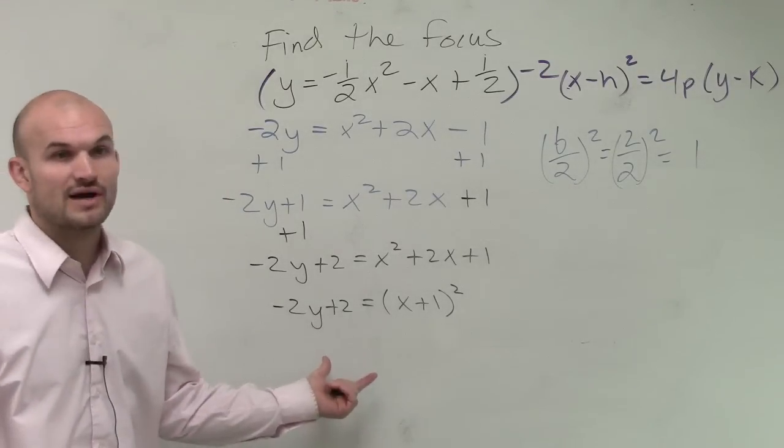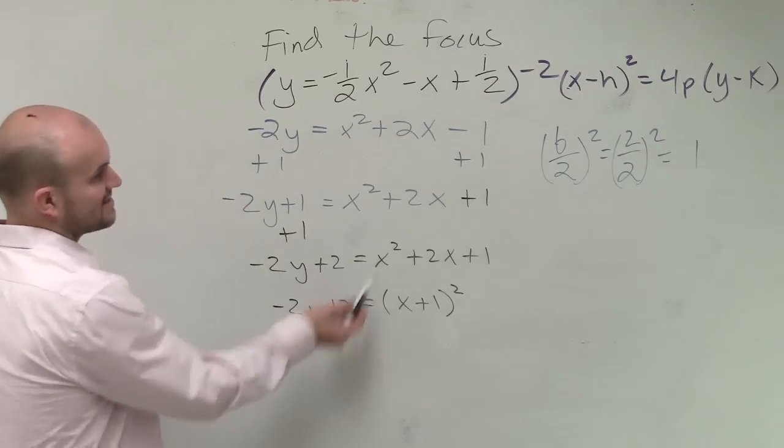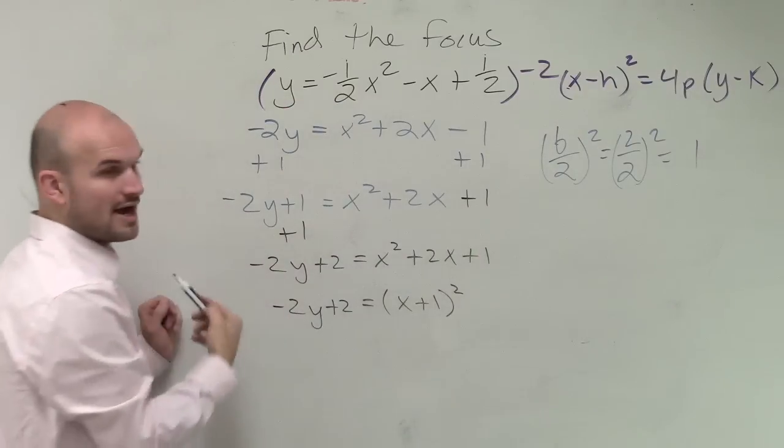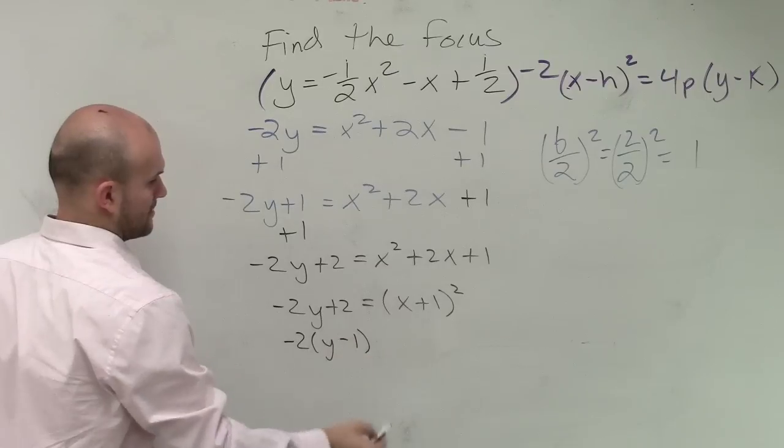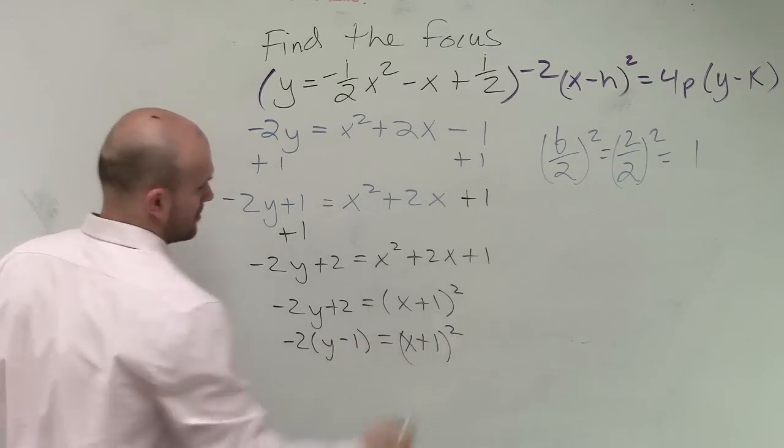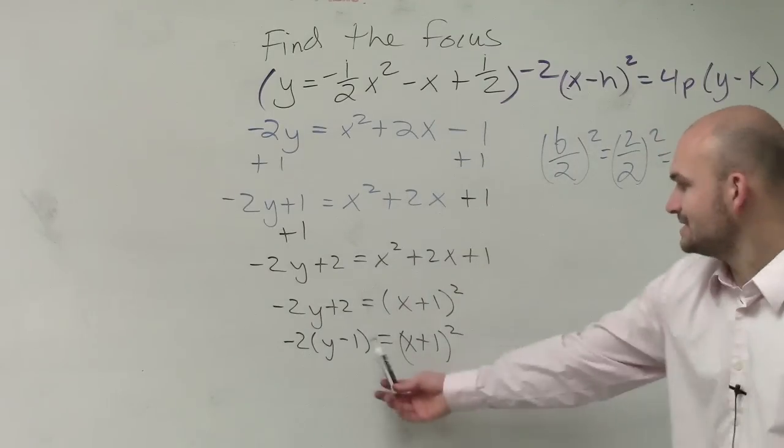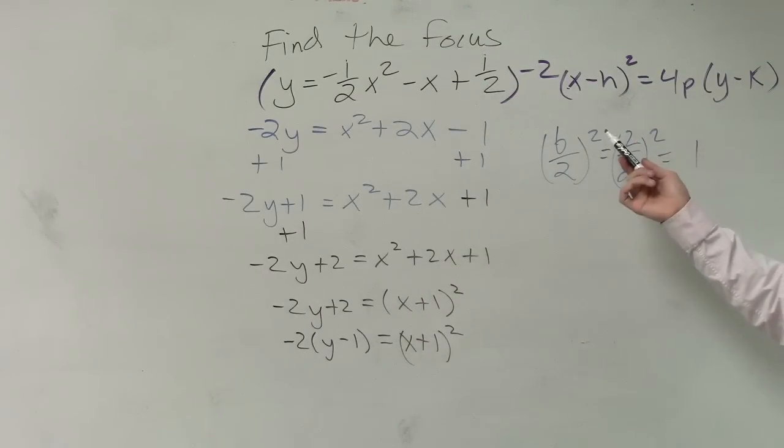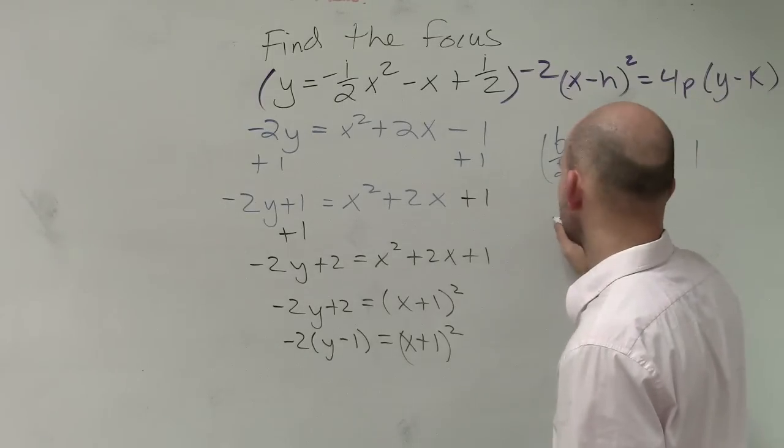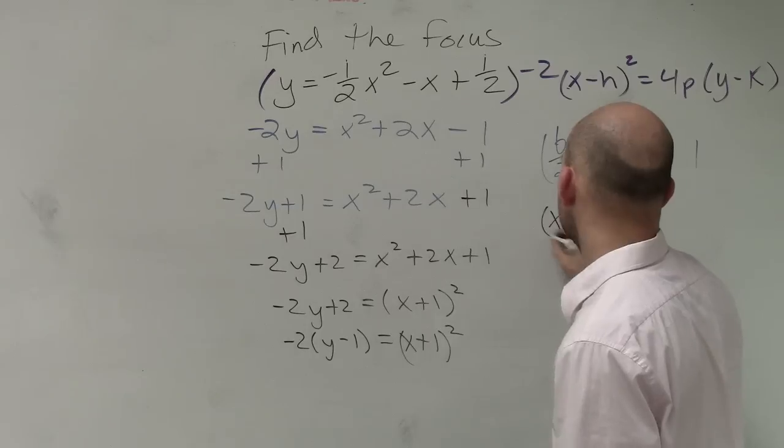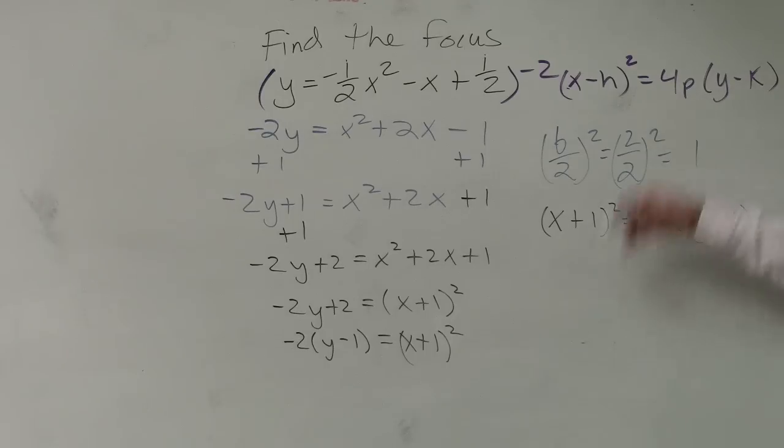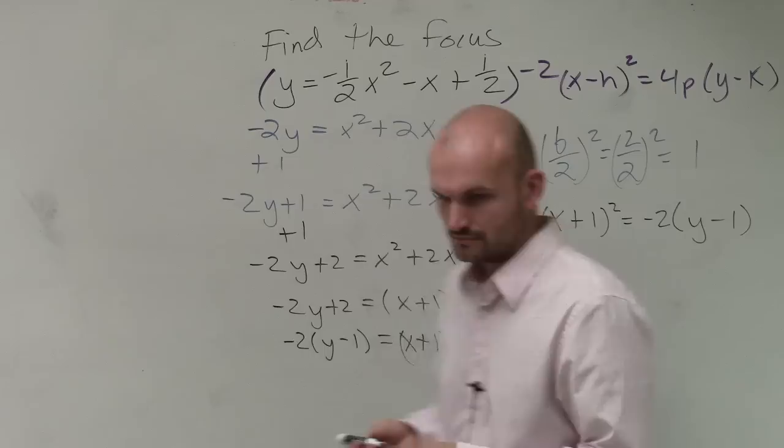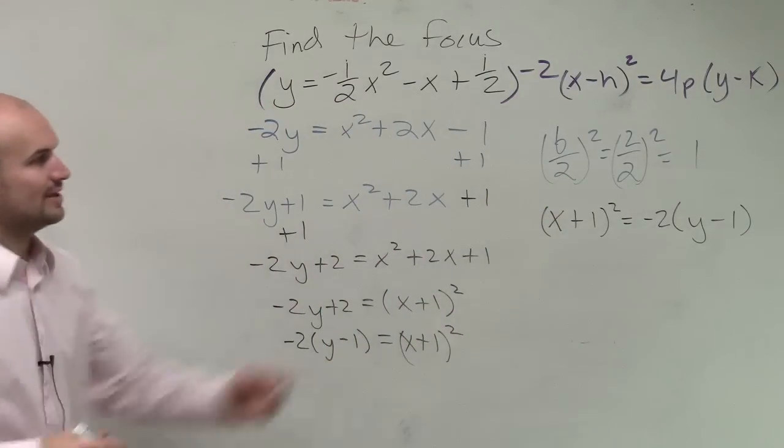So I can factor this down to negative 2y plus 2 equals x plus 1 squared. And then here, I'm going to leave this as, since I want it to be a positive y, I'm going to factor out a negative 2. So now, does this equation look very similar to the equation I have in the purple? Yeah. The only thing I'm going to change is I'm just going to rewrite it so it's in that same format. So I have x plus 1 squared equals negative 2 times y minus 1. I just swapped them so you can see that it looks exactly like the formula.